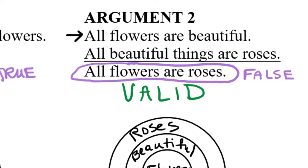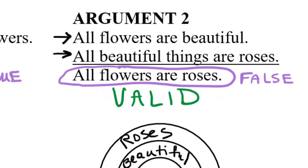If you look back at our premises — and remember, premises are things we're assuming to be true, and if they're true, they force the conclusion to be true — we had a faulty premise there. 'All beautiful things are roses' is not true. Because we had a faulty premise, even though our reasoning was correct, the conclusion we came to was false. So just because your argument is valid doesn't mean the conclusion is necessarily true. You may have heard the expression 'garbage in, garbage out' — if the facts we started with were flawed, then even if our reasoning is valid, we can come to a poor conclusion.